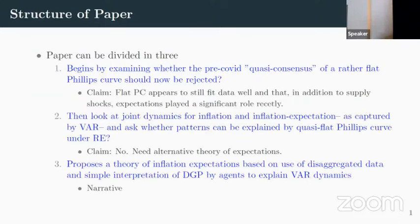This is a paper that can be divided in three parts. The first part looks at to what extent the pre-COVID view that there was a flat Phillips curve should now either be rejected or whether it's still a reasonable starting point. We claim that there are many parts where a flat Phillips curve still fits the data well. In addition, when you think about that, it gives you that there are supply shocks, but what we find is that expectations of inflation also played a significant role over the recent period.